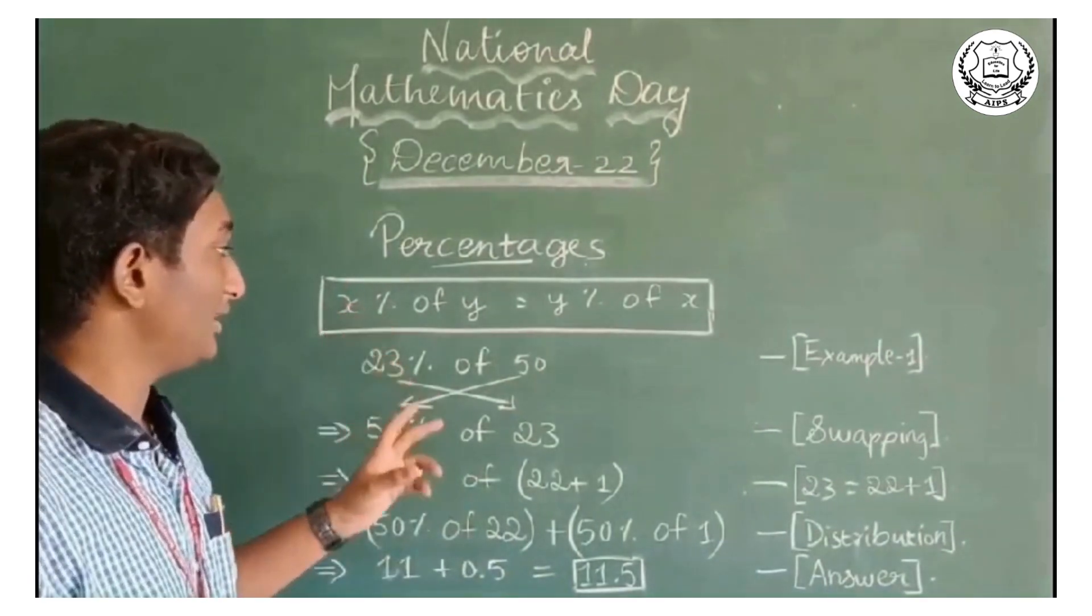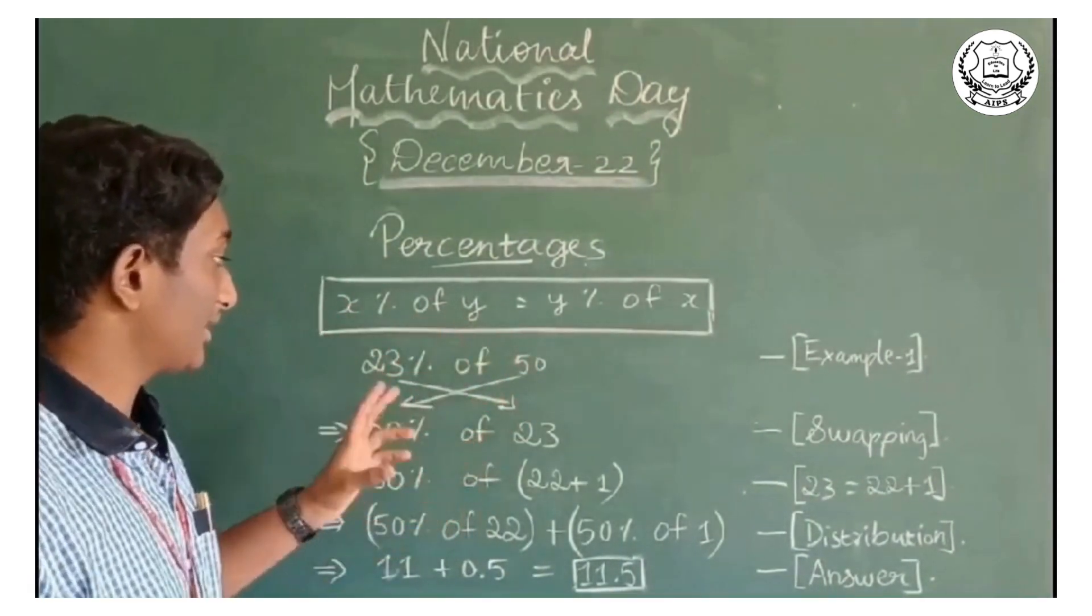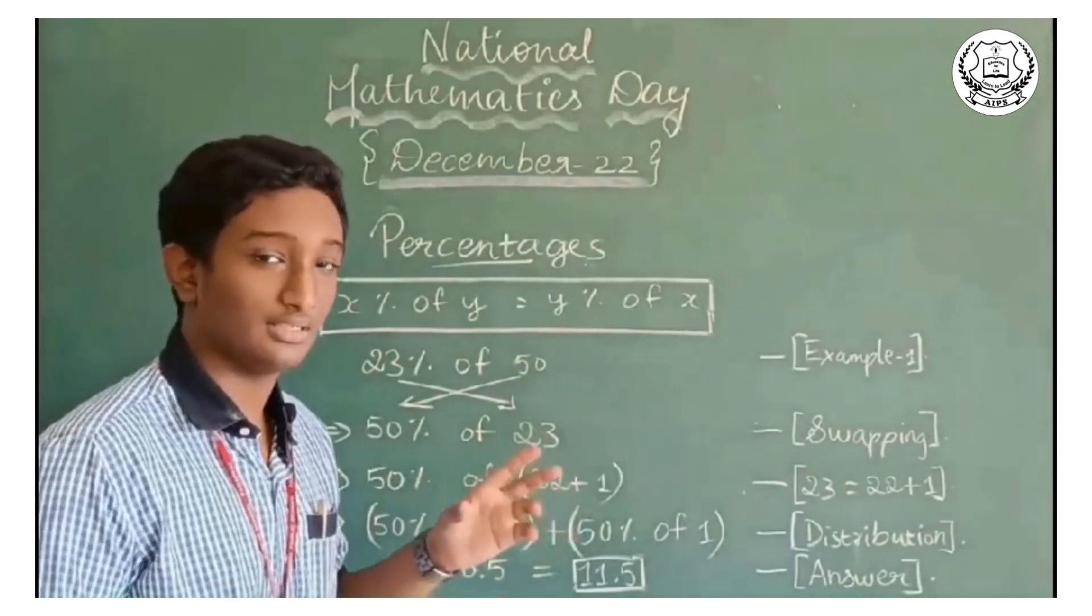Considering x as 23 and y as 50, which can also be written as 50 percent of 23, which is easier.